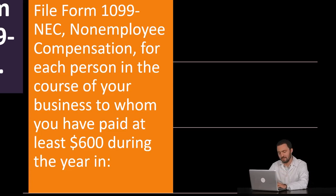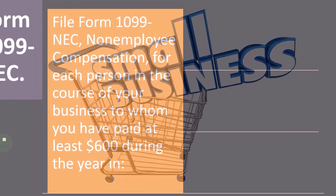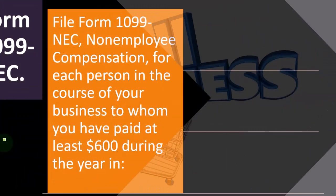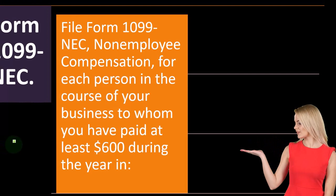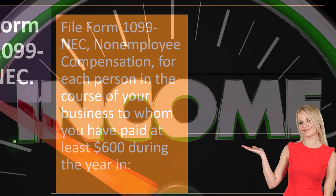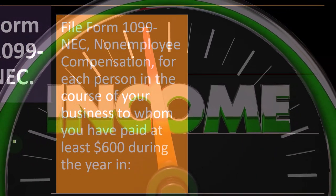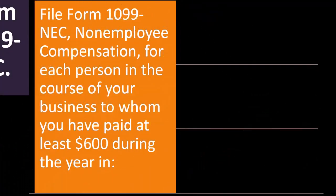When would you receive a 1099? If you're receiving one, it's likely because you're a small business that did work for other businesses as a contractor — you are not incorporated or an S corporation. Therefore, they were required to give you a 1099. When you record your income, it would need to be equivalent to or greater than the amount of the 1099s you received; otherwise, the IRS would question your situation.